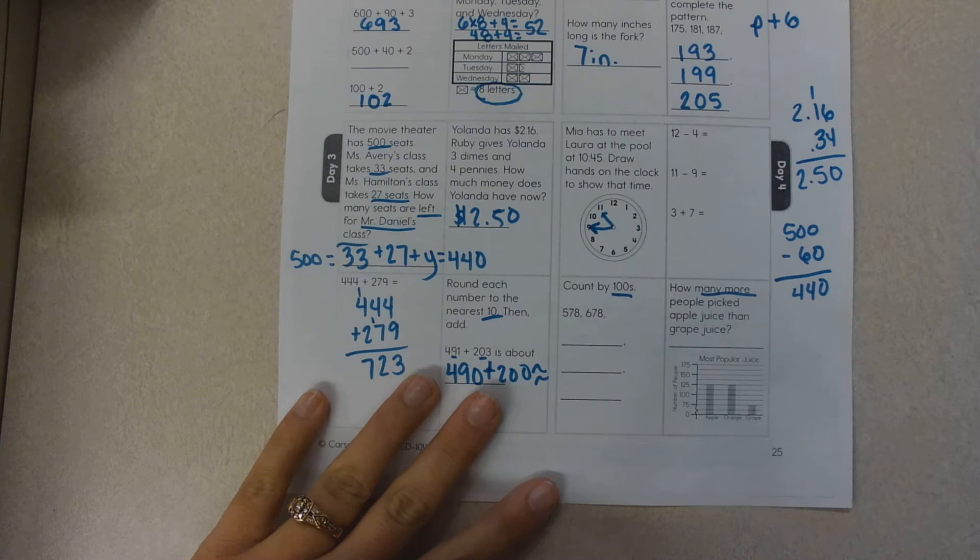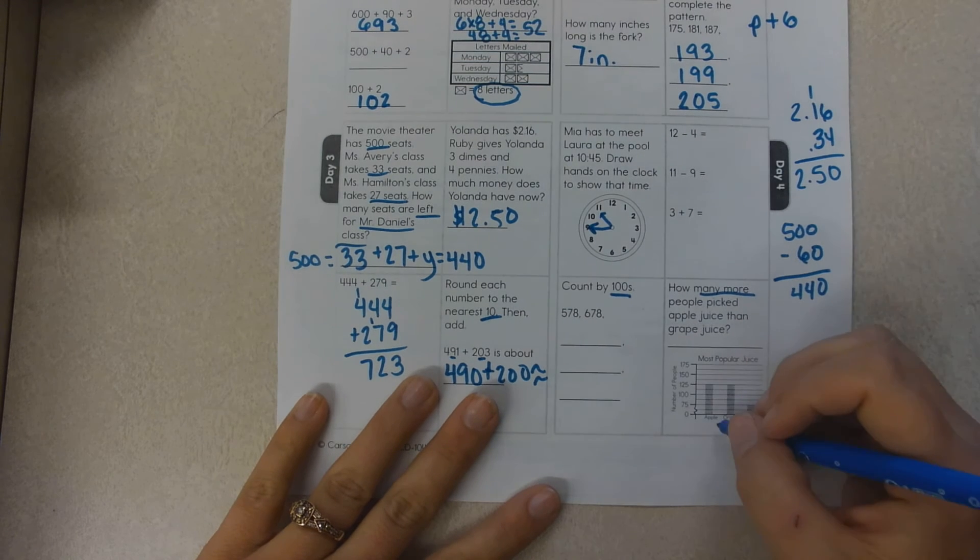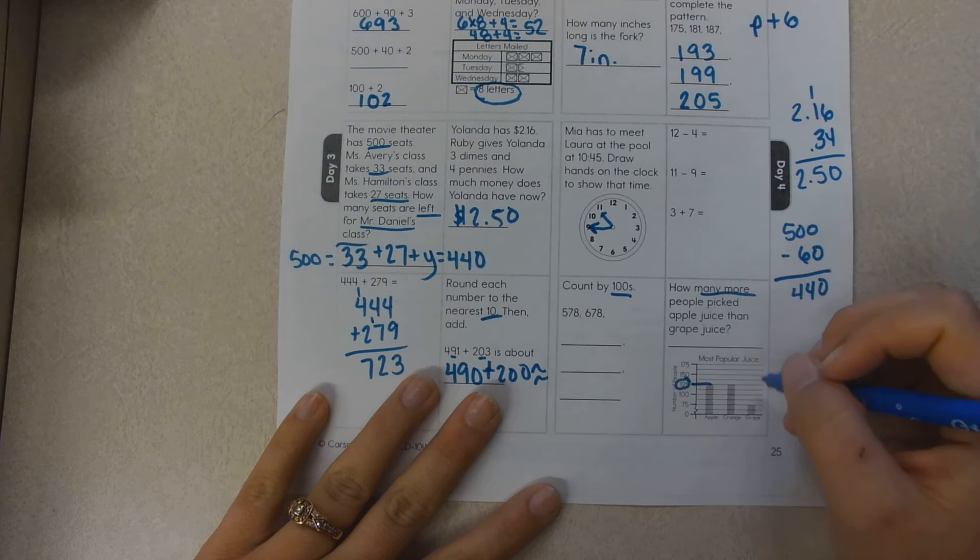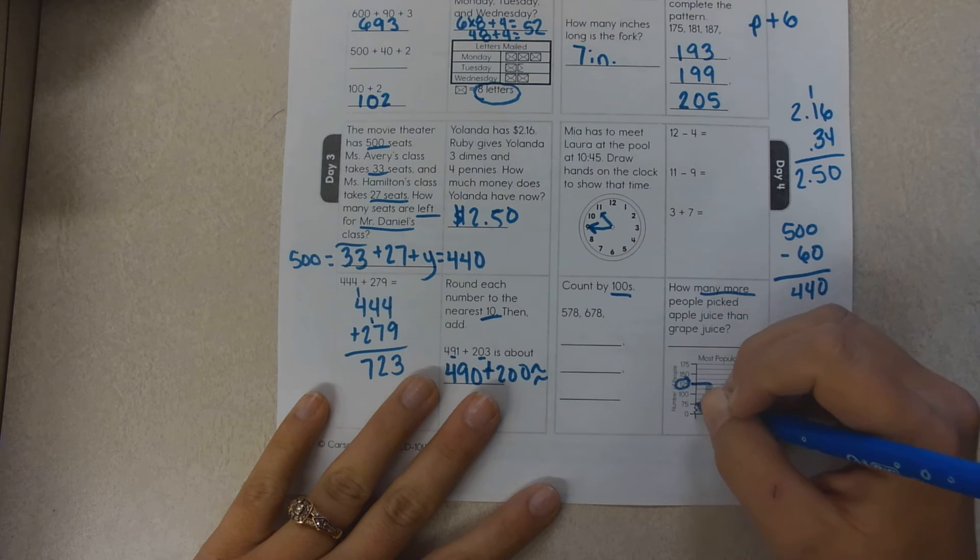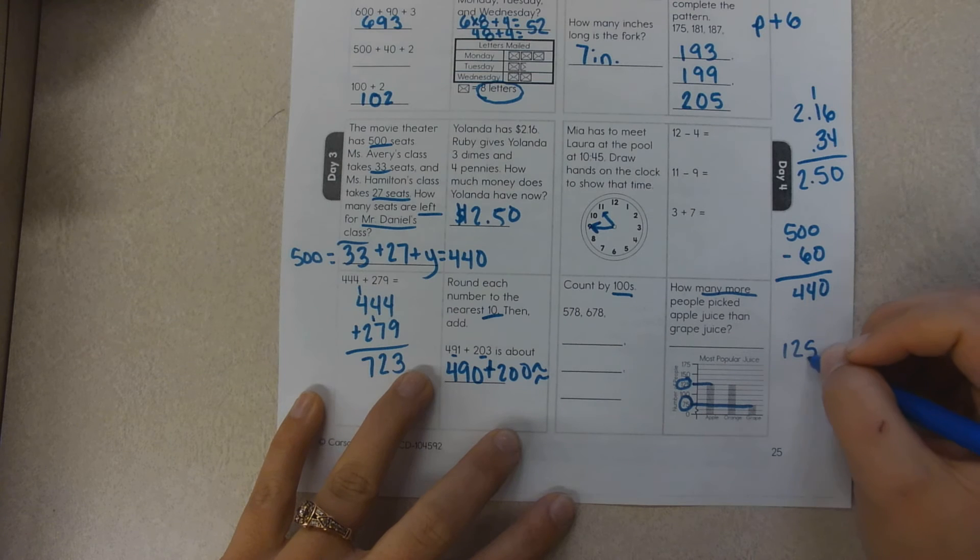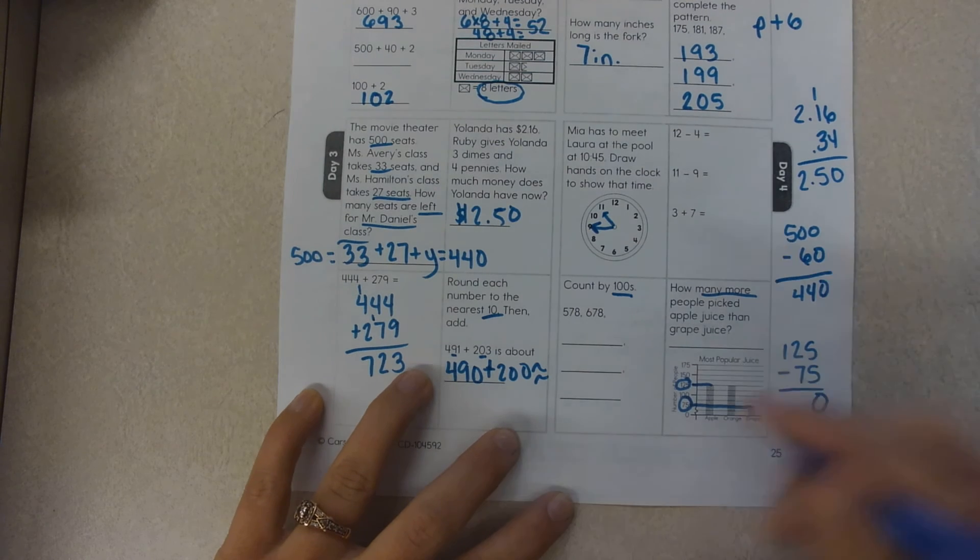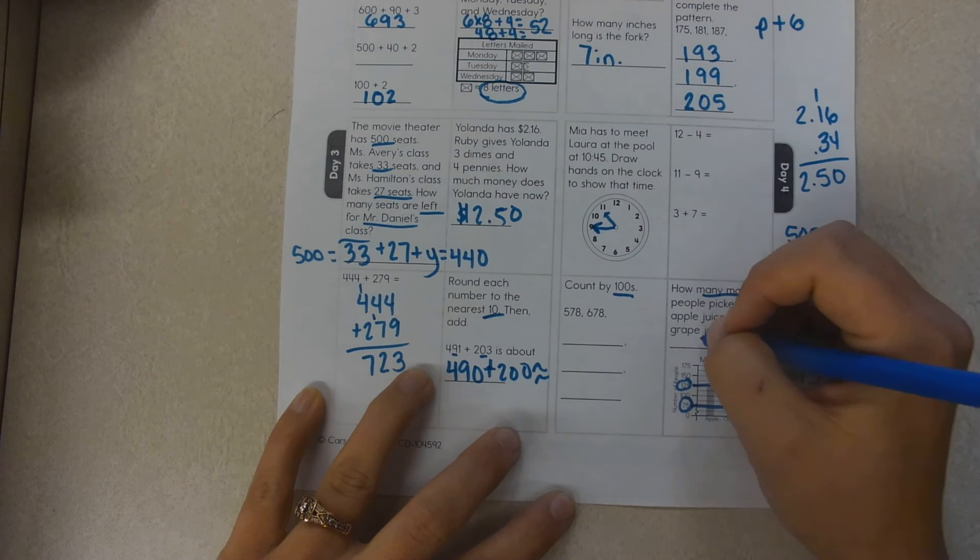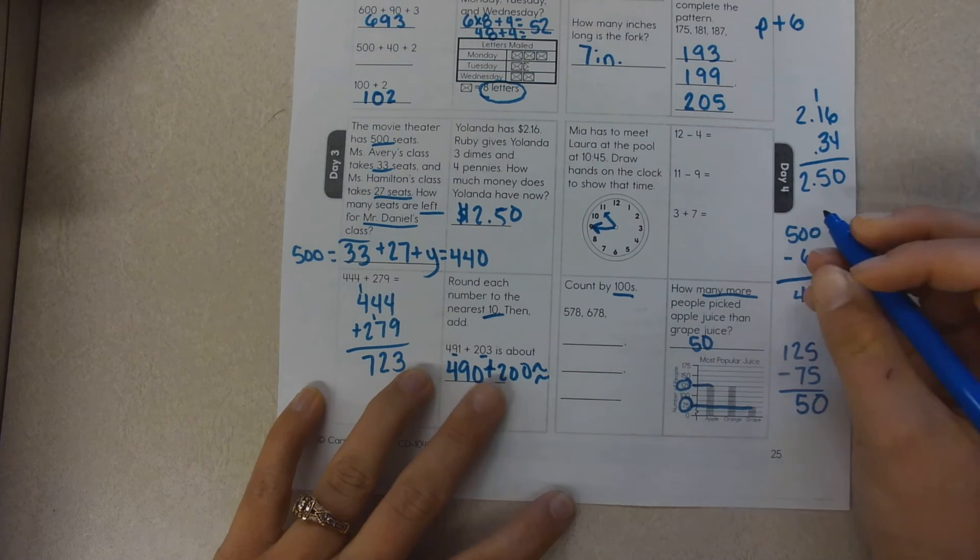picked apple juice than grape juice? Well, if I look at this, apple juice is 125, grape juice is 75. So 125 take away 75: 5 take away 5 is 0, 12 take away 7 is 5, so 50 people.